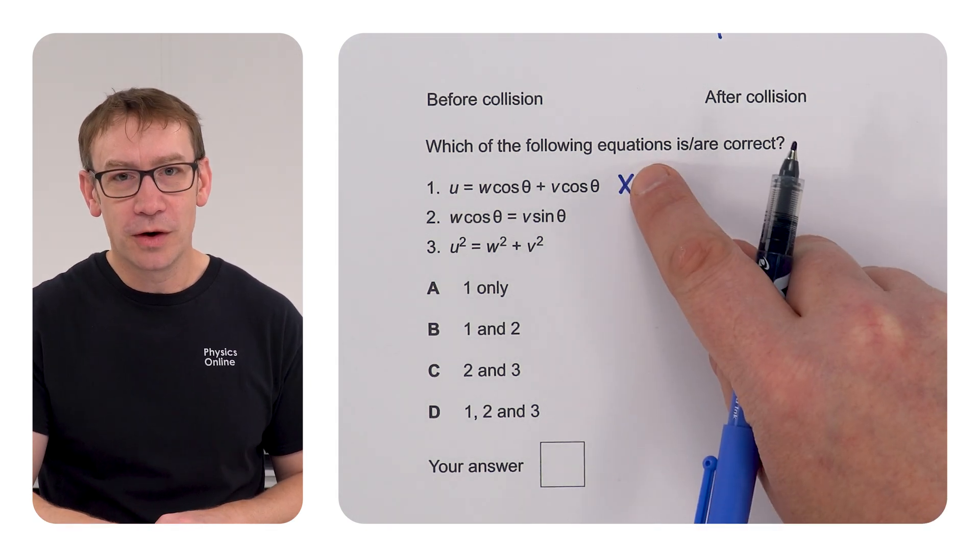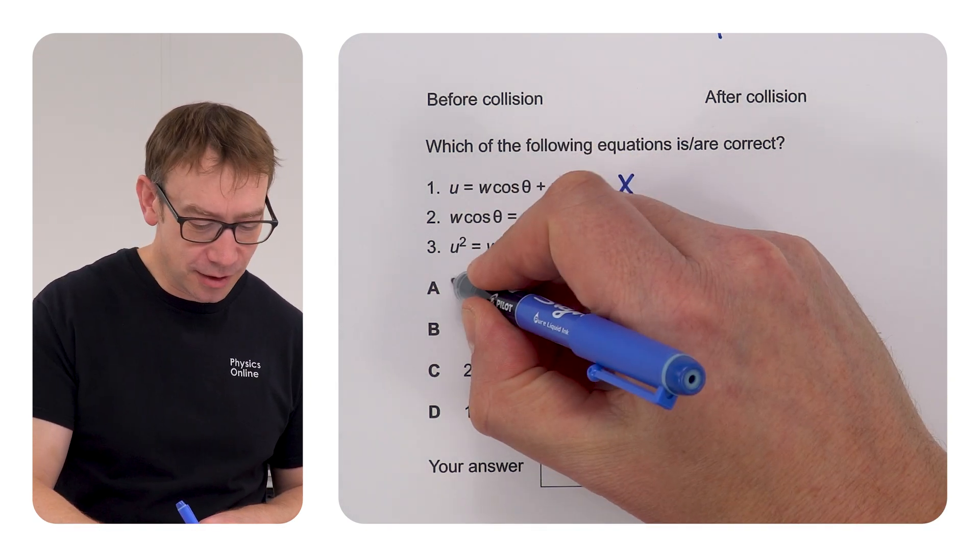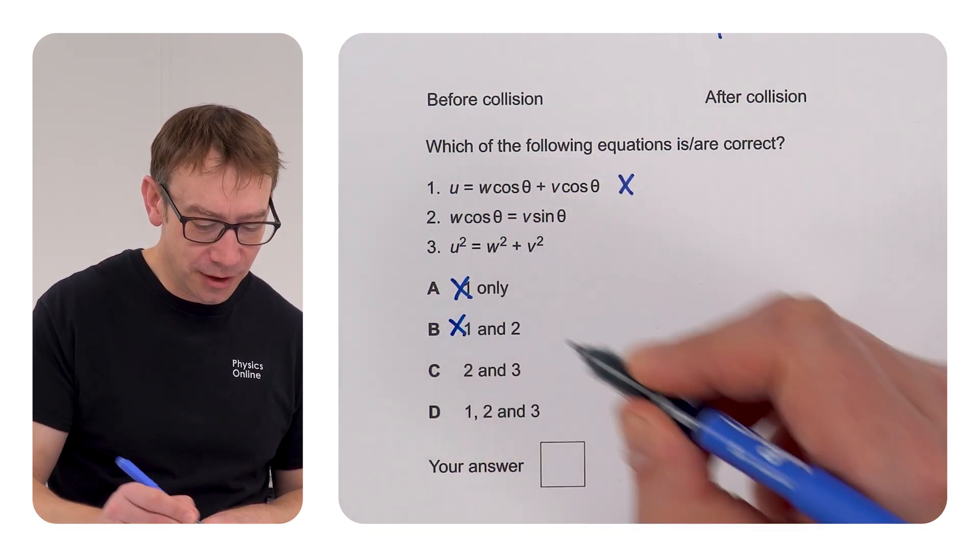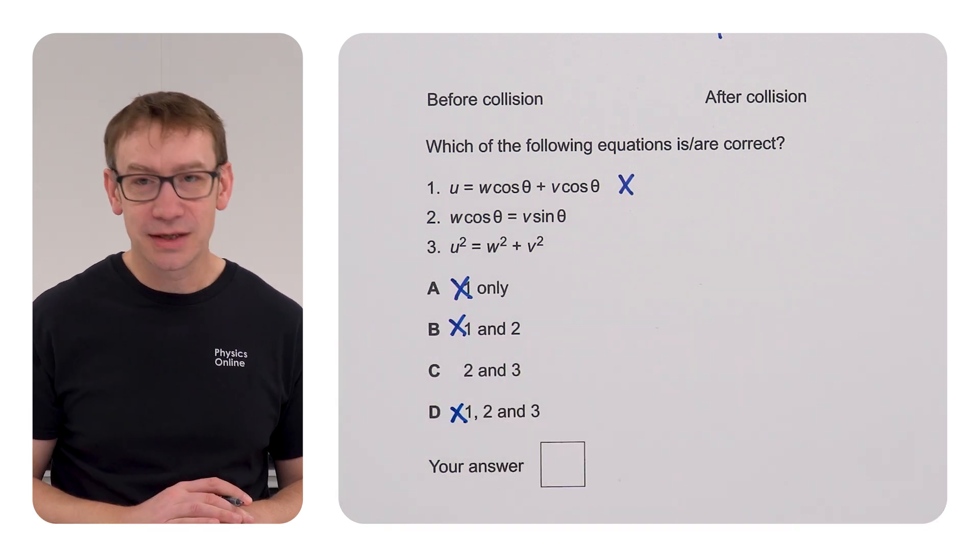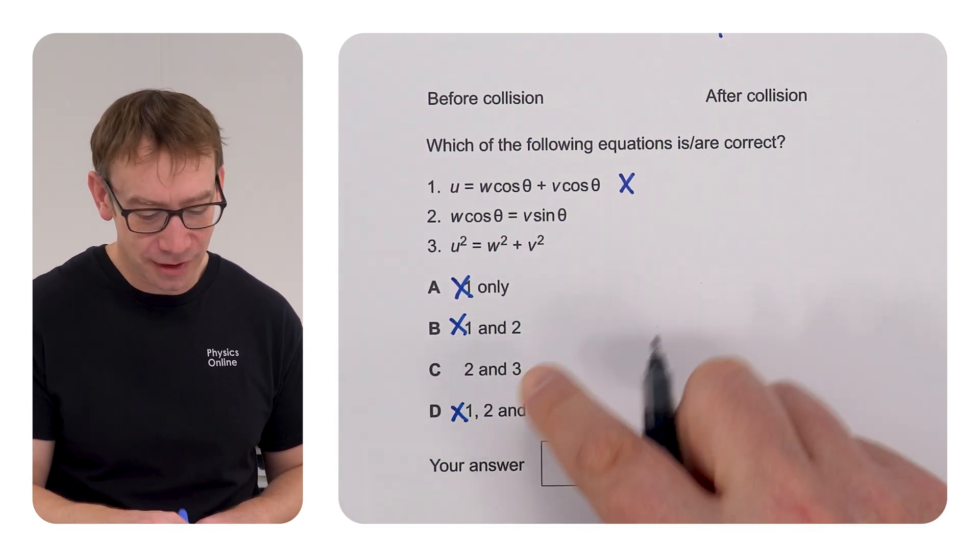So, if one isn't correct, then A can't be correct, and B can't be correct, and D can't be correct. And therefore, the only possible answer is C.